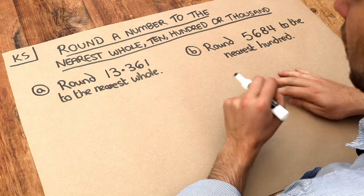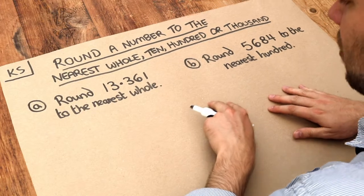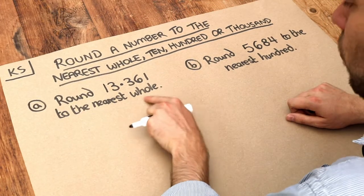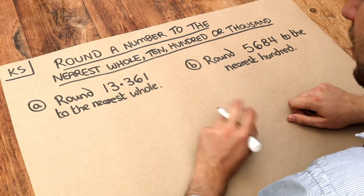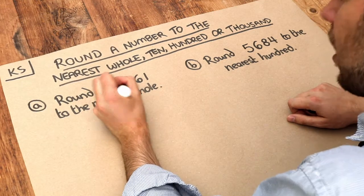Now the key is to first identify the particular digit we're interested in. If we're rounding to the nearest whole, a whole is referring to the units digit, so this digit here, so I'm going to underline this.